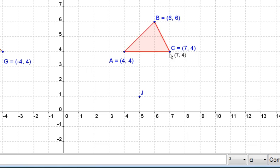Point B, right 1, down 3, we get 7, 3. Point C, right 1, down 3, we get 8, 1.